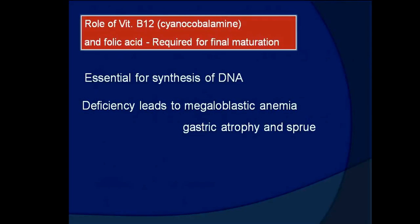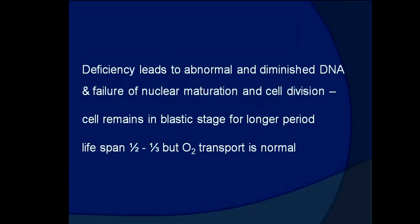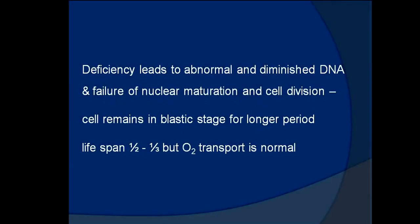Deficiency of vitamin B12 and folic acid leads to megaloblastic anemia due to abnormal and diminished DNA and failure of nuclear maturation and cell division. The cell remains in a plastic stage for a longer period, and the lifespan is about one-half to one-third of normal, though oxygen transport remains normal.